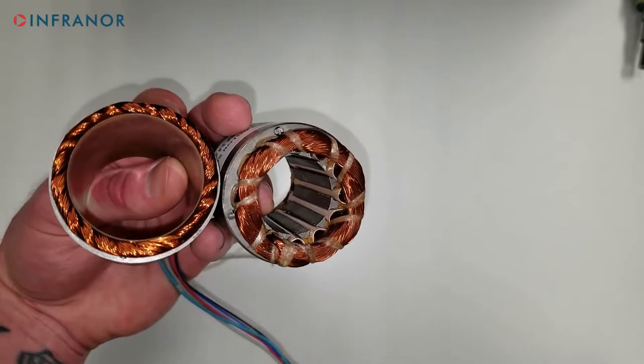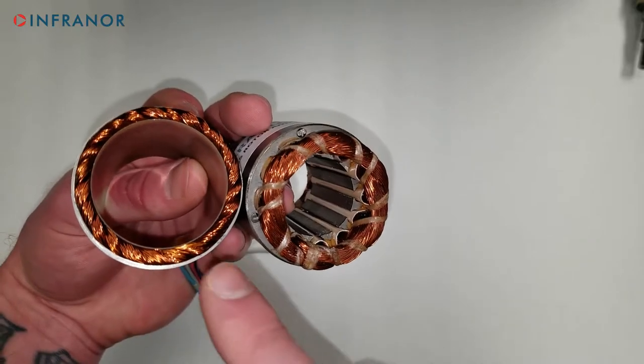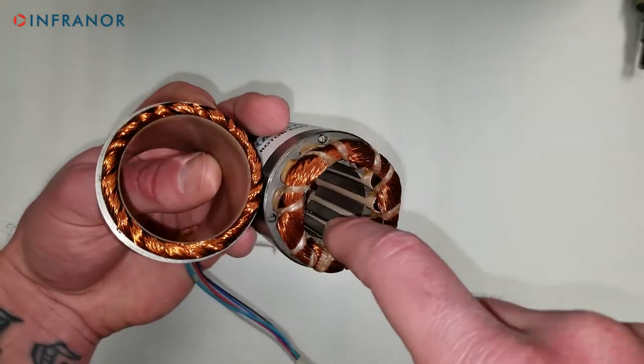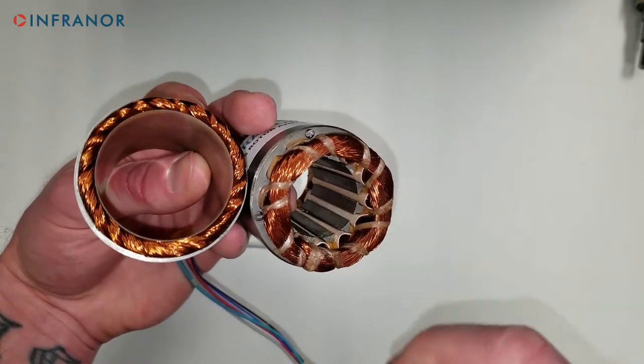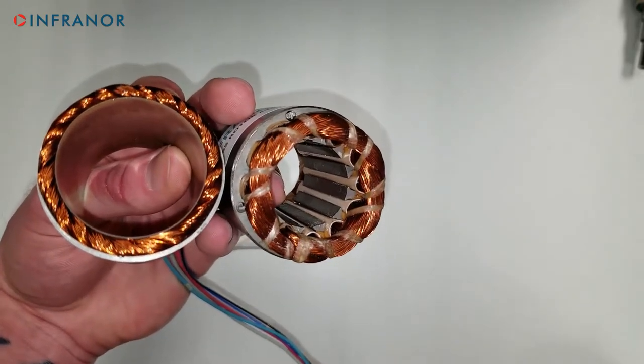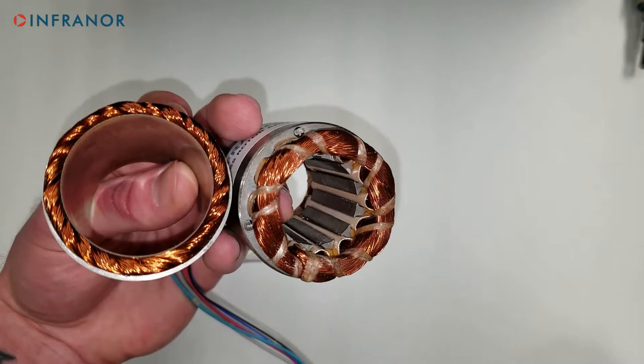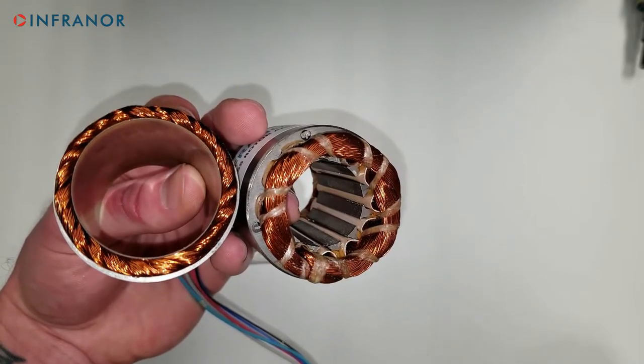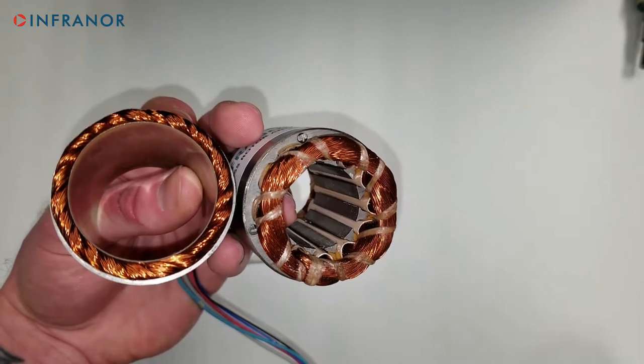When looking at the two stators, we can see that the FP stator has no teeth. FP, BL, teeth on the inside. There are many benefits realized from eliminating the teeth. Since the magnets on the rotor are no longer attracted to the teeth, we are able to obtain very smooth motion due to the zero-cogging effect.